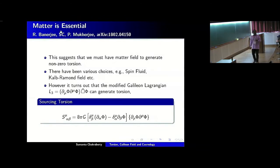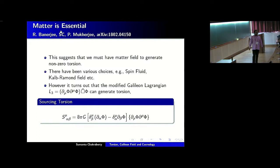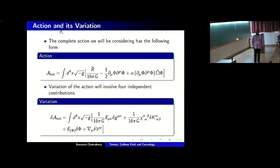People have tried to include various types of matter to source torsion — for example, there is work by Frederick Hale on spin fluids, and work from string theory on the Kalb-Ramond field. But it turns out that if you modify the Galileon Lagrangian, the Galileon field itself can act as a source of torsion. The reason is that when you take the L3 part of the Lagrangian, you have a box operator with two derivatives, and if torsion is present, this part will be modified. The Galileon field couples to torsion, so that when you vary the Lagrangian with respect to the contortion, you can actually generate torsion. The spin density S^μ_αβ, which was zero in vacuum, becomes non-zero and depends on the derivative of the Galileon field.